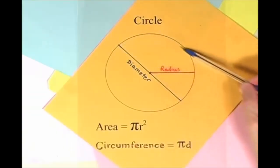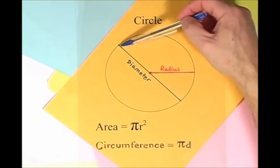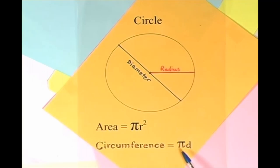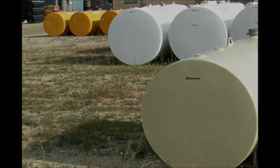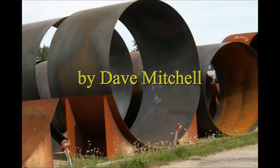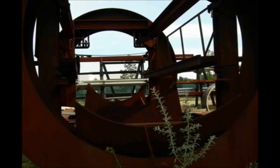Here is a circle, it knows how to get around. It has a radius from center to rim. And its diameter's a line that goes from side to side while passing through the center, now isn't that simple. Pi r squared sounds like area to me, when I need a circumference, I'll just use pi d. Pi r squared sounds like area to me. Here is a circle, it knows how to get around. It has a radius from center to rim.